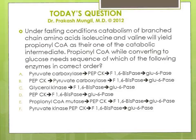Succinyl-CoA is a TCA cycle intermediate and is converted to succinate by succinyl-CoA thiokinase. Succinate is then converted to fumarate, and fumarate to malate in the TCA cycle. Malate moves out of the mitochondria into the cytoplasm, where it is converted to oxaloacetate. Oxaloacetate is then converted to phosphoenolpyruvate (PEP) by the enzyme phosphoenolpyruvate carboxykinase (PEPCK).